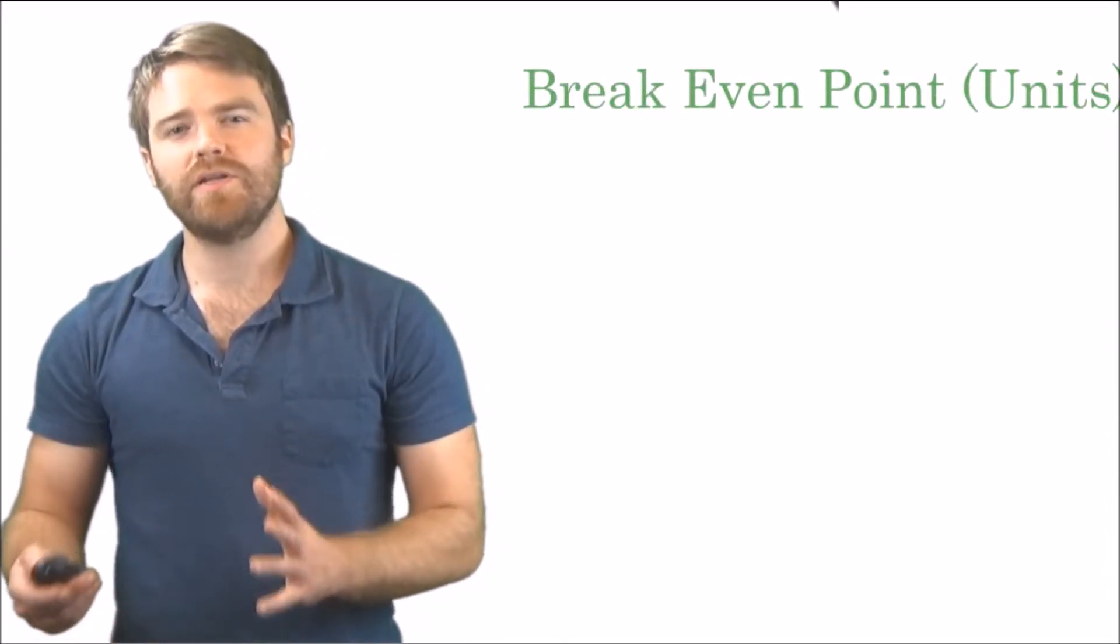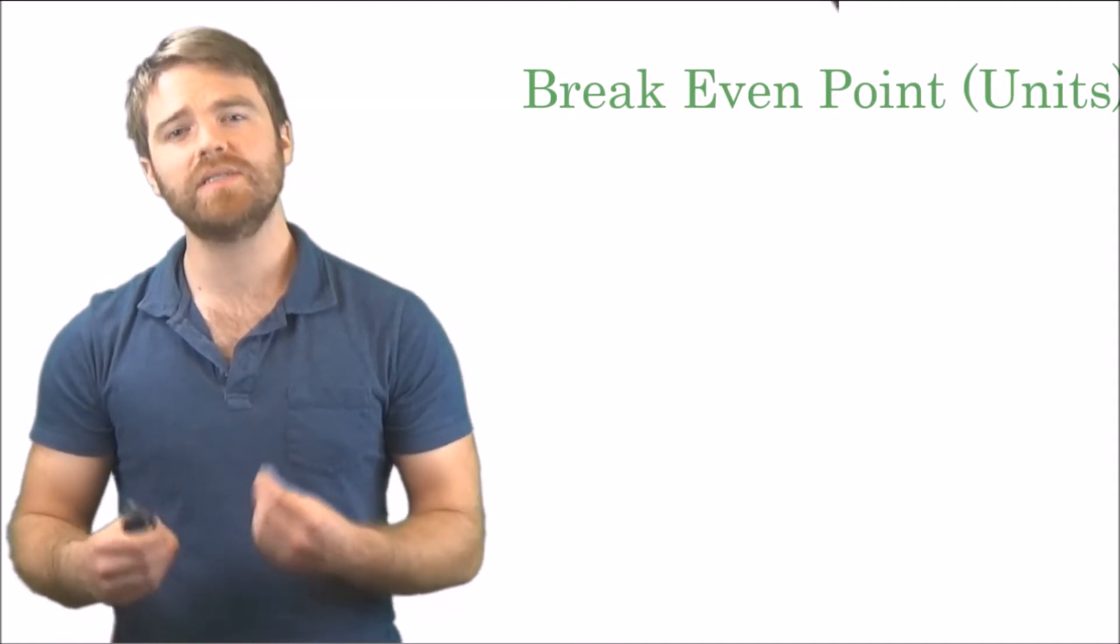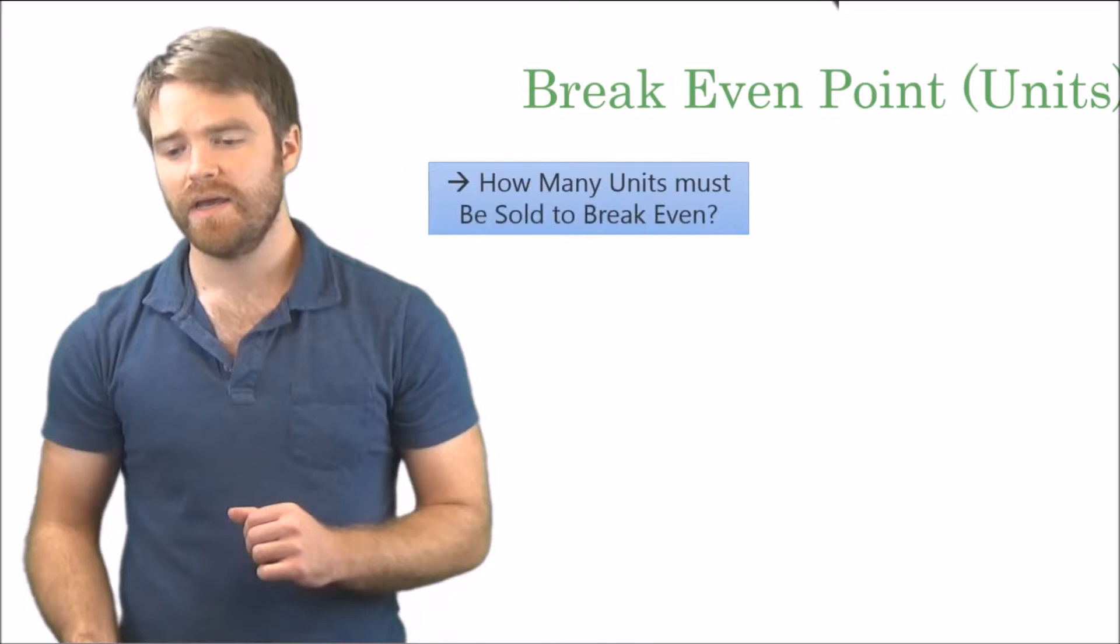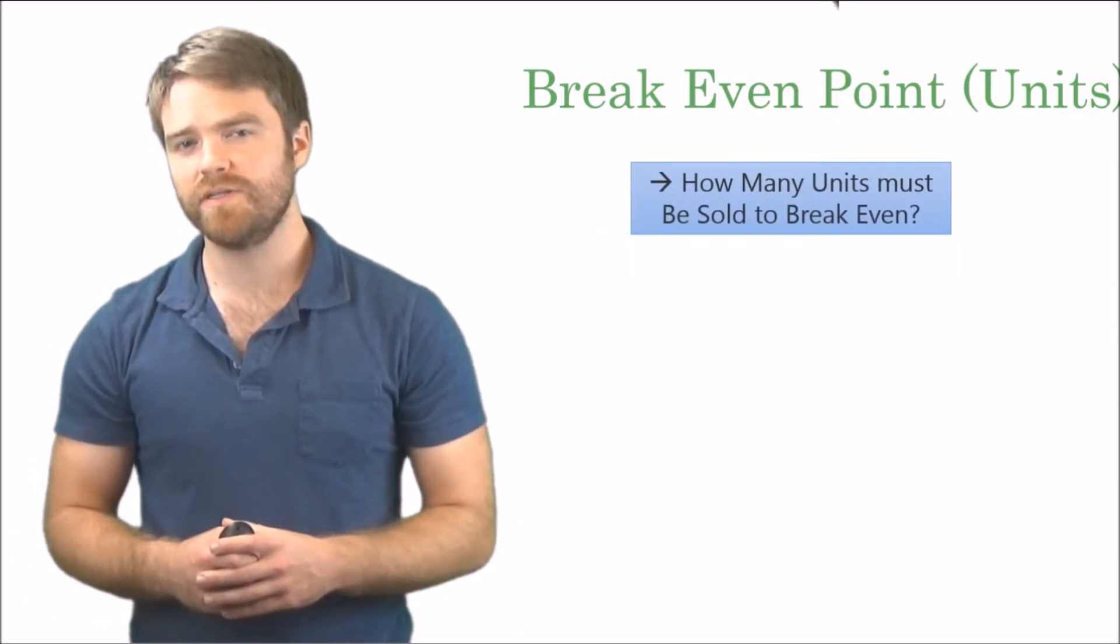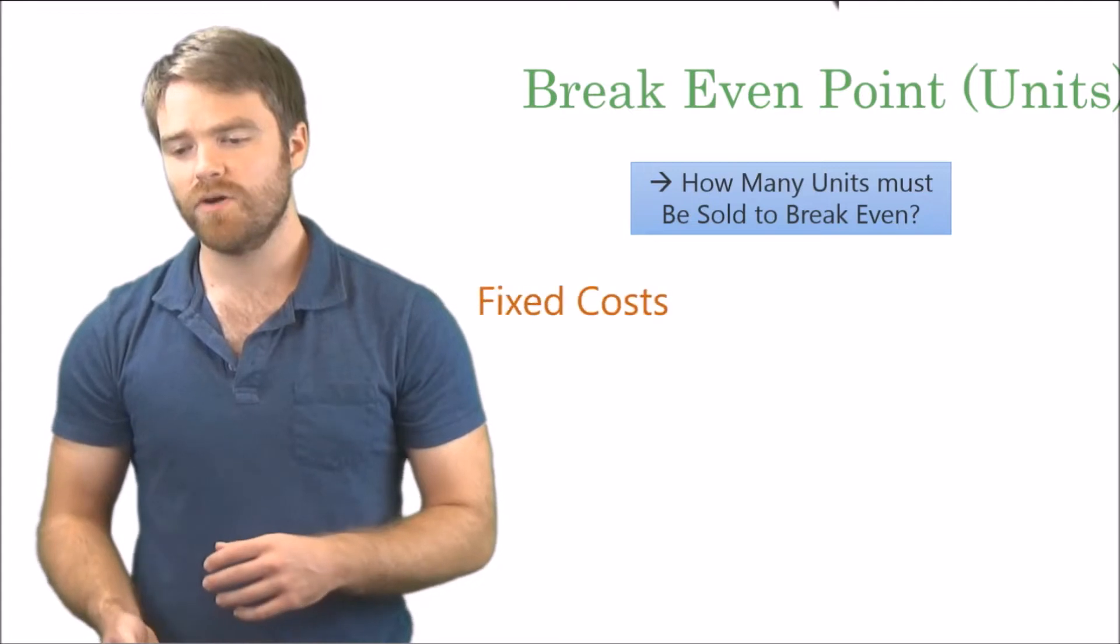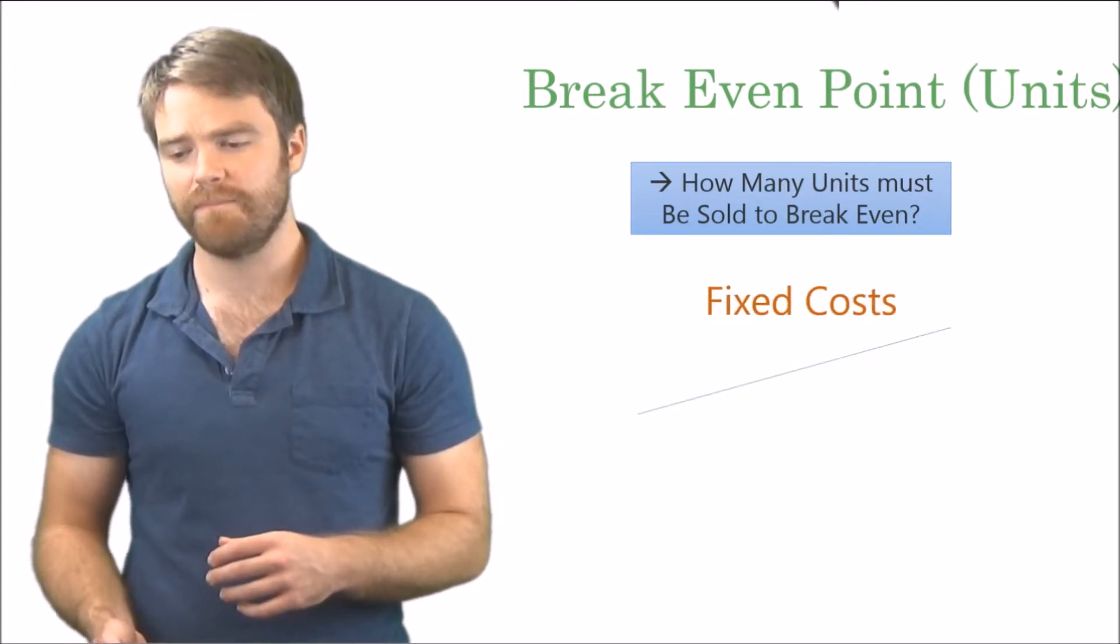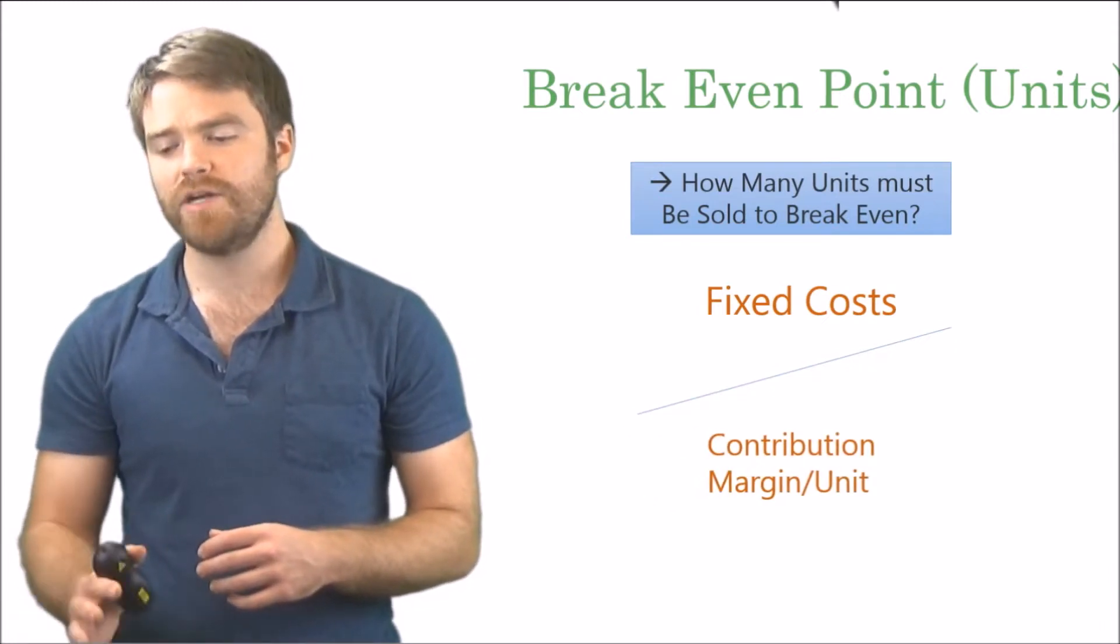So let's talk more about that here. How do we calculate break-even point in units? Or another way to say it is, how many units must I sell to break even? That's what you want to figure out. As you see here, how many units must be sold to break even? Take your fixed costs and divide by the contribution margin per unit. Make sure it's per unit.